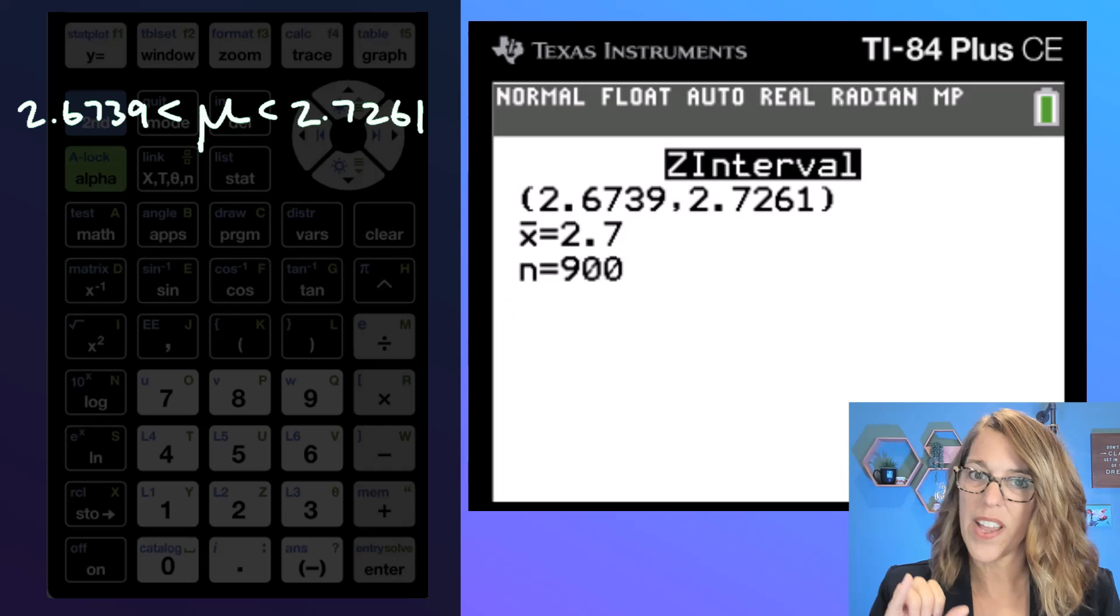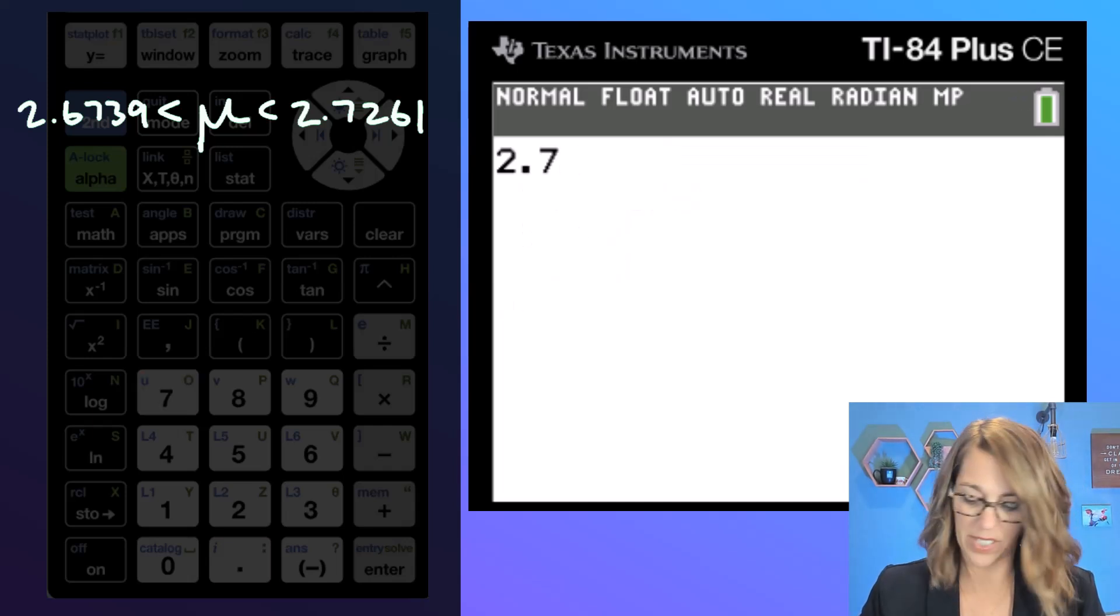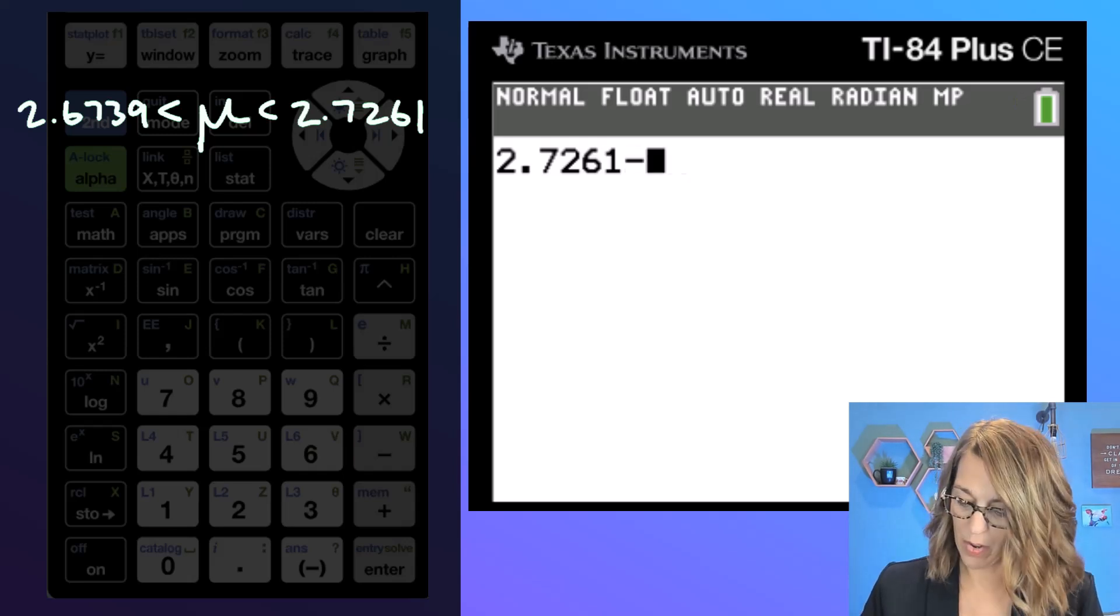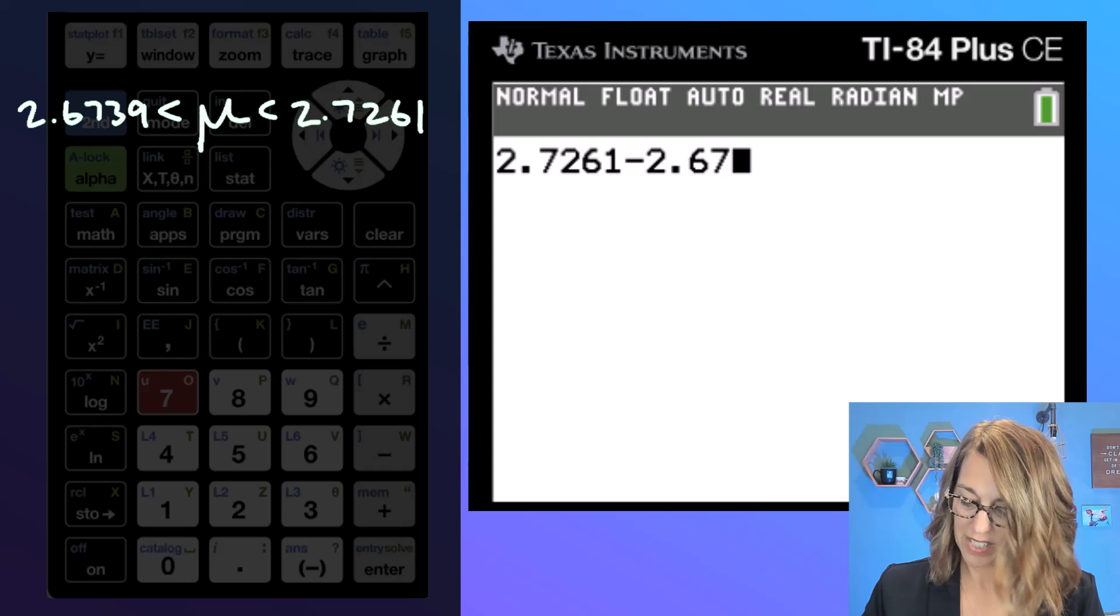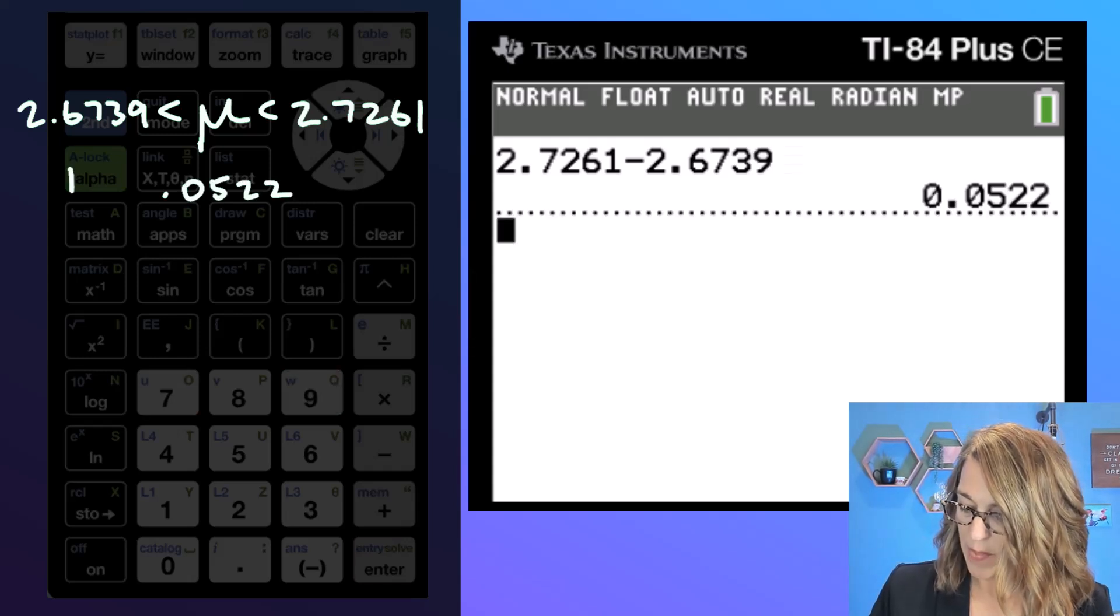To find that margin of error, I want to find the length of this interval. So I'm going to take that upper number 2.7261 and subtract the lower number 2.6739, and then I will divide that by two.